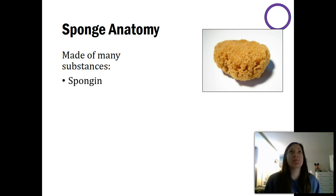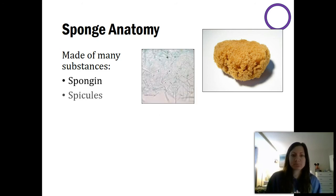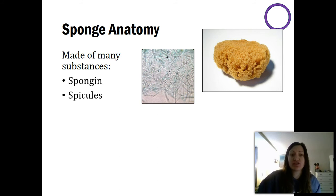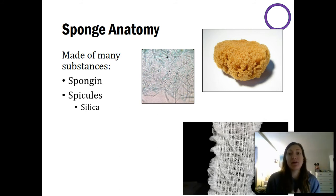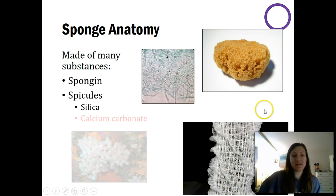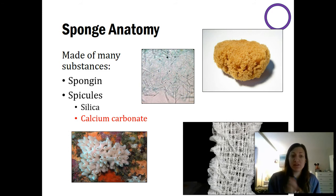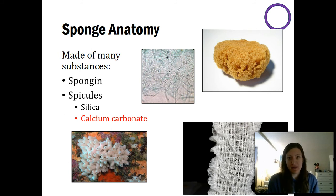Within this spongin are molecules called spicules. They almost look like playing jacks. Spicules can be made out of two different substances: silica, as seen in this picture, or calcium carbonate. Some sponges, called silica sponges, are made only of this silica compound and don't have spongin. Both silica and calcium carbonate are minerals taken from the water column and created by cells within the sponge.